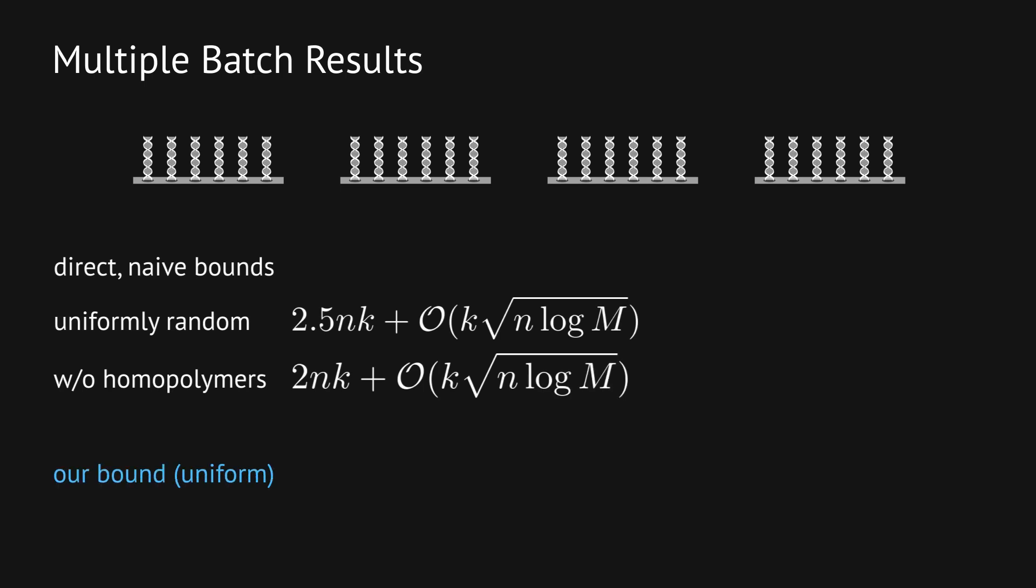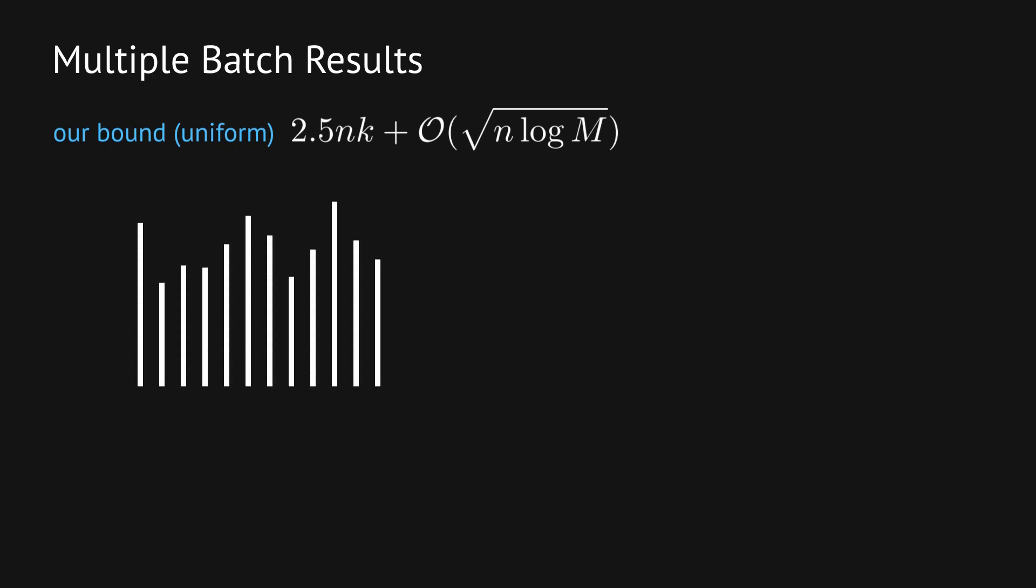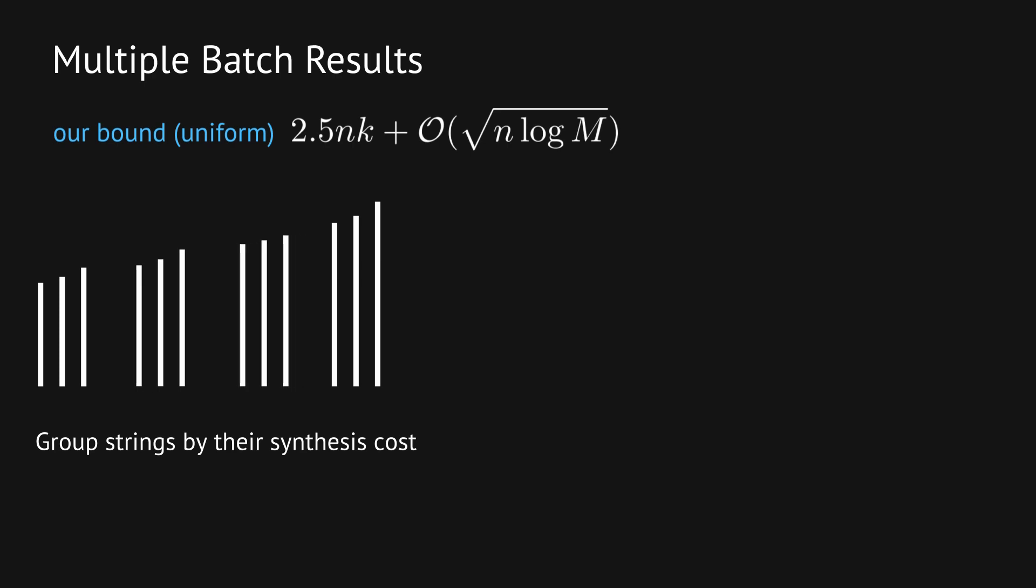Our main result is that we can do better by grouping strings together in a smart way. Take m random strings and sort them by their synthesis cost with respect to the ACGT repeating super sequence. Put the m over k strings with the lowest cost in one batch, the next m over k in the next batch, and so on. We prove that this leads to a total cost for the k batches that removes a factor of k from the deviation term.